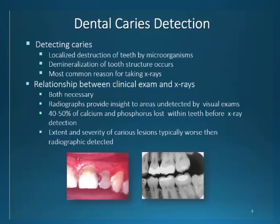Identifying dental decay requires both a clinical exam and radiographic exam. Due to the nature of a two-dimensional image from a three-dimensional object, the oral exam can detect lesions not seen on radiographs. This holds true for radiographs identifying images not possibly seen visually. Interproximal decay may not be detected until 40 to 50% of the calcium and phosphorus is lost from the tooth surface. It is known that the severity of the identified decay is always worse than radiographic appearances. This fact must be remembered when informing a patient of the conditions and need for restoration and care.